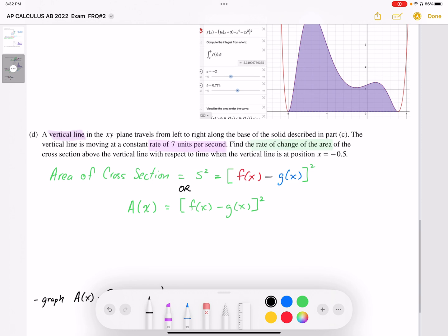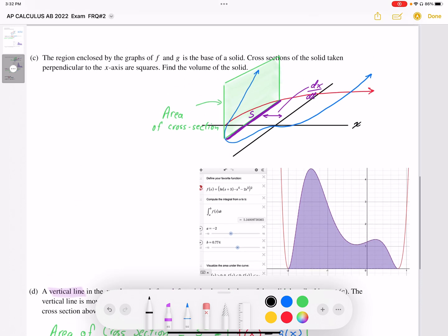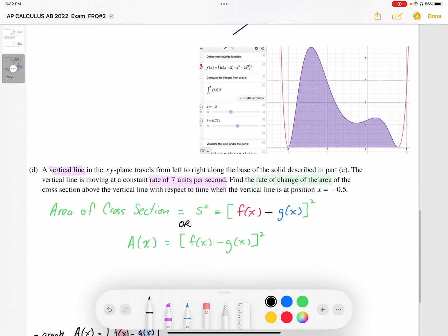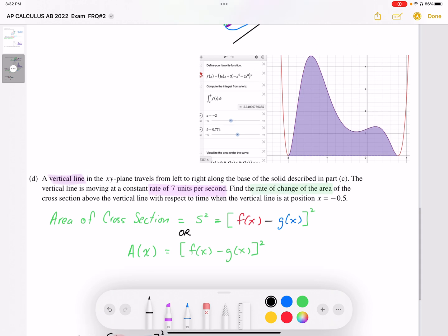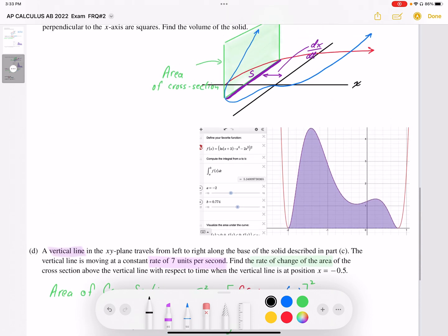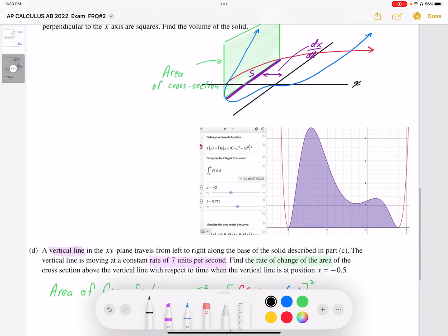Okay, so first of all, we want to establish an expression for the area of that cross-section, which is s squared. So we're going to take that length s and square it to get the square area. So s squared is going to be the difference between the upper function and the lower function, or the f(x) minus the g(x), or the red minus the blue.